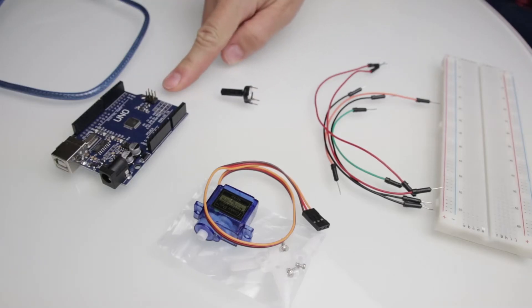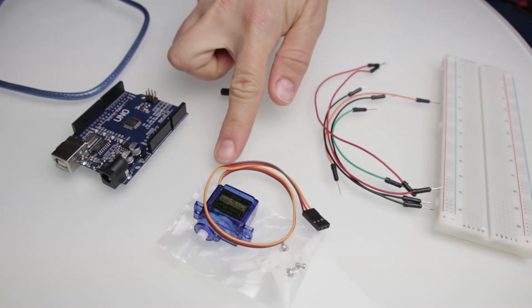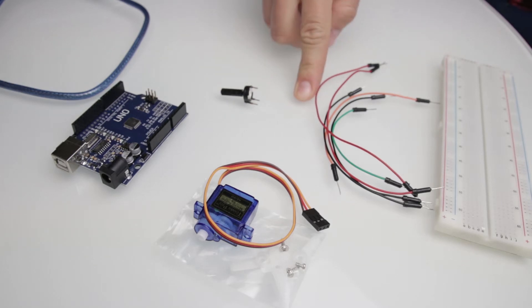We will need these parts: UNO R3, servo SG90, 10 kilo ohm potentiometer, male-to-male jumper wires, and a breadboard.